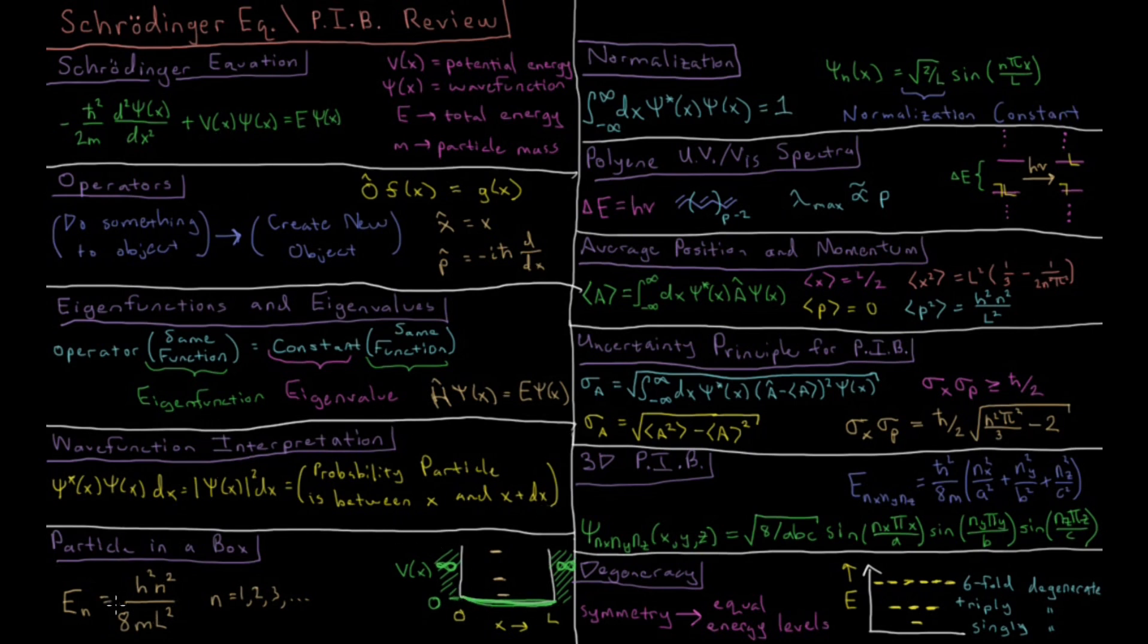Solving the Schrödinger equation for the energies in this case, you get that the energies are quantized depending on some integer n, and the energies are Planck's constant squared times n squared over 8 times the mass of the particle times the width of the box squared.